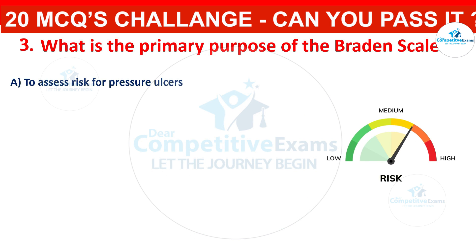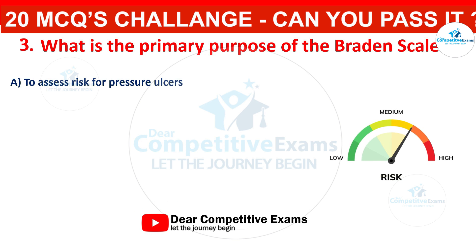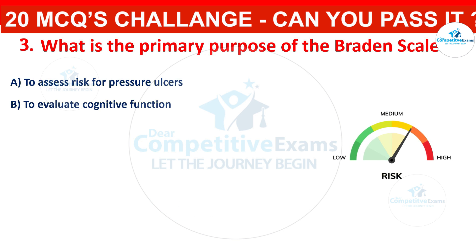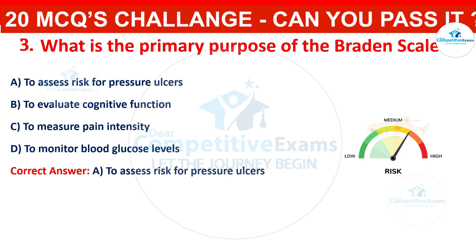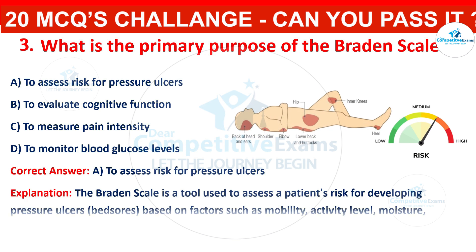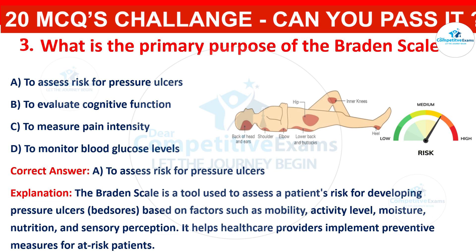Question 3: What is the primary purpose of the Braden scale? Your options are: to assess risk for pressure ulcers, to evaluate cognitive function, to measure pain intensity, or to monitor blood glucose levels. The correct answer is to assess risk for pressure ulcers. The Braden scale is a tool used to assess a patient's risk for developing pressure ulcers (bed sores) based on factors such as mobility, activity level, moisture, nutrition, and sensory perception. It helps healthcare providers implement preventive measures for at-risk patients.